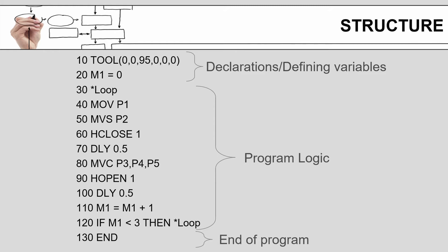M1 is my variable. I then have my program logic starting with a definition for where my loop exists. I do a couple of moves, I close the hand, I delay for half a second. Delays are in seconds, not milliseconds or hundredths of a second. Then I do some moves and open the hand.